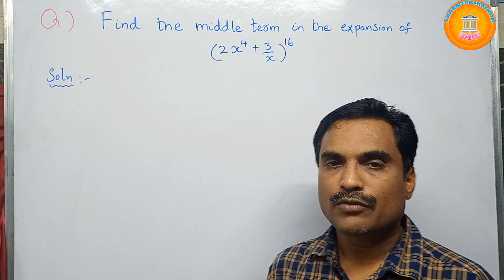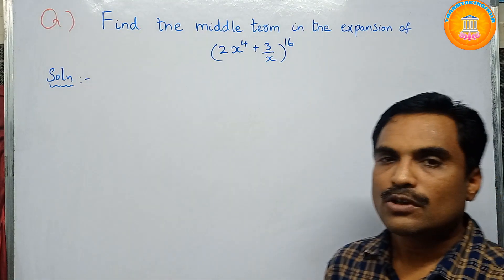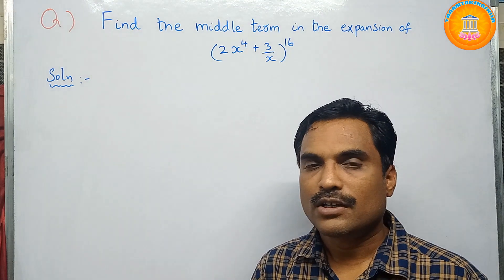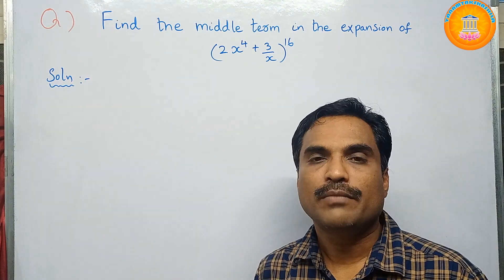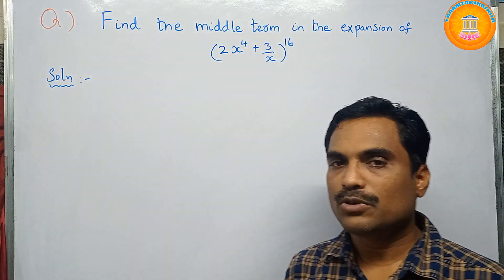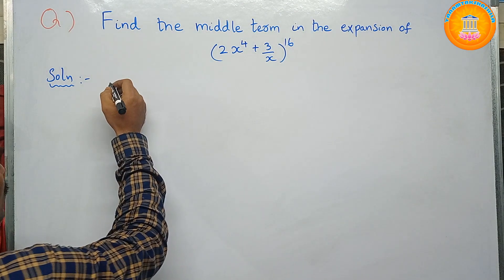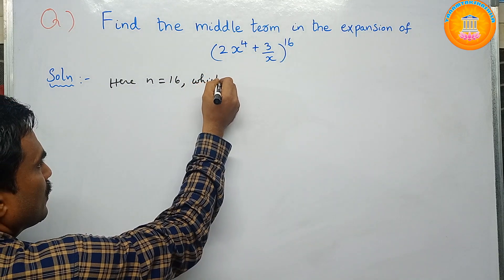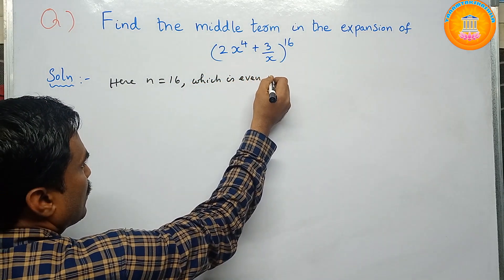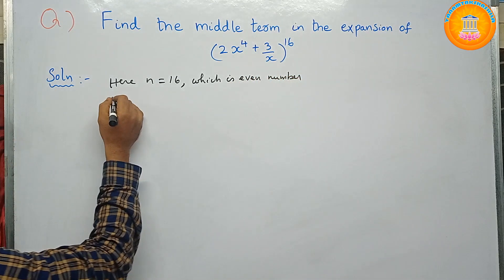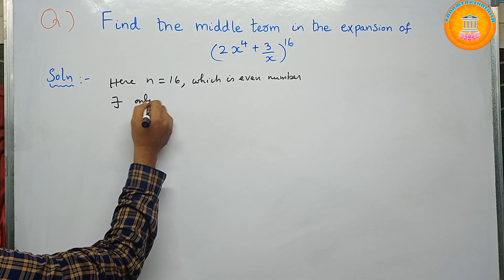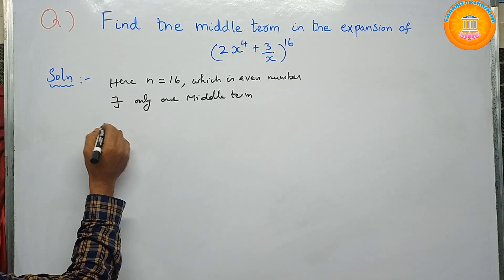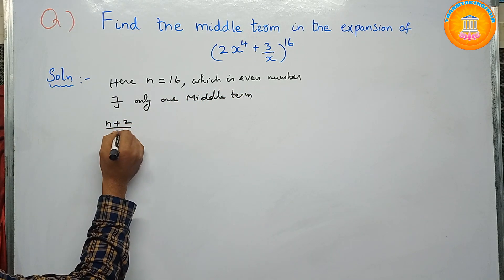The expansion is of the form (x + a)^n. To find the middle term, check the n value — here n equals 16, which is an even number. When n is even, there exists only one middle term, and the formula for that term is the (n+2)/2 th term.